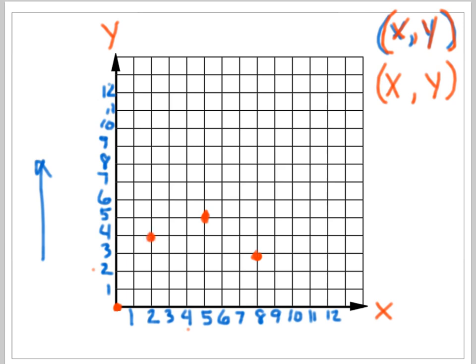All right, so now I'm going to give you some coordinates, and let's see if you can name what the ordered pair would be. How about right here. What's the ordered pair for that? You say 5, 2. That would be correct.